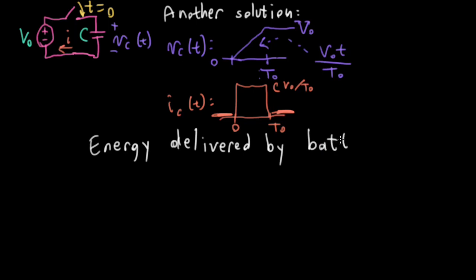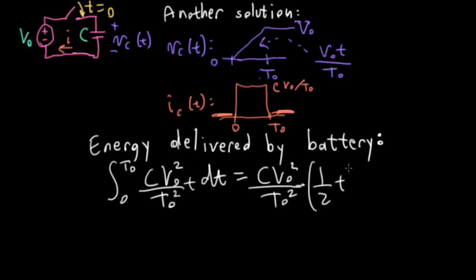So, now what is the energy delivered by the battery? I'm going to integrate between zero and T0, because this is zero outside of there. And I've got C, V0 over T0. But then I'm also multiplying it by this here. So, I'll actually have V0 squared over T0 squared whole thing times T, DT. And let's see. So, I'll have C, V0 squared over T0 squared. And then I'll have one-half T squared evaluated at T equals zero and T equals T0.